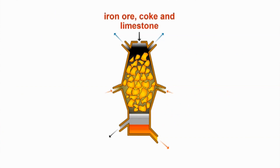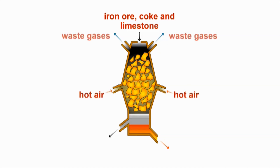The raw materials — the iron ore hematite, coke, and limestone — are added at the top of the blast furnace. At the same time, hot air is used to heat up the entire system, while waste gases are removed from the system.